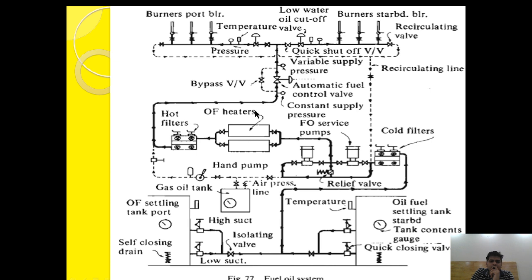After the hot filter, the oil passes through an automatic fuel oil control valve. This automatic fuel oil control valve regulates the fuel oil flow depending upon the requirement of the burner. It varies the amount of fuel depending upon the rate of steam generation.